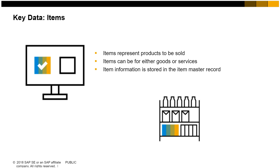If services are defined as items, they can be entered into a sales order along with physical items. Alternatively, you can use the item or service type field to switch to a service type document, where descriptions of services can be entered along with prices.